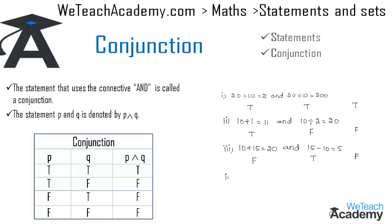Let us consider another example: '15 × 3 = 14 and 15 + 3 = 6.' Both statements are false, as 15 × 3 = 45 and 15 + 3 = 18. So the conjunction here would also be a false statement.